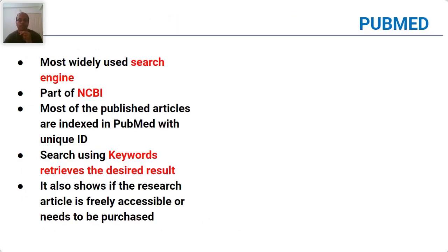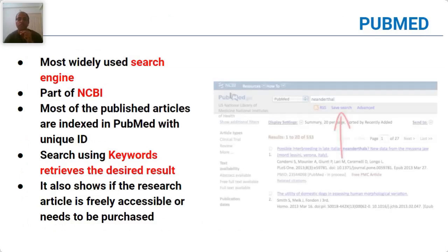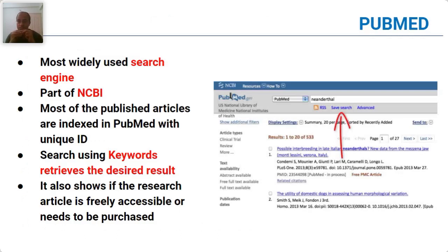Some of the most commonly used sources of literature include, first, PubMed — the most widely used search engine. PubMed is part of the National Center for Biological Information (NCBI). Most articles published in any field have a unique index ID with PubMed. You type in your keyword and retrieve the desired result. The advantage of using PubMed is that you can also know whether an article is freely accessible or needs to be purchased. If it's freely accessible, you can directly download it. If you click on the paper, you will get the abstract and whether you can get the full text or not.